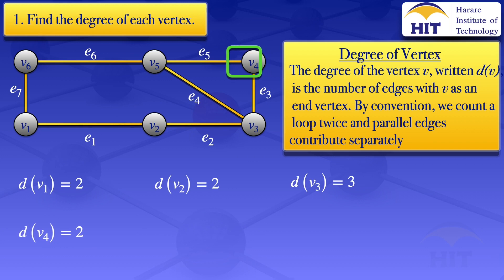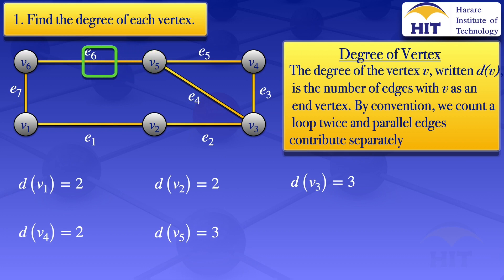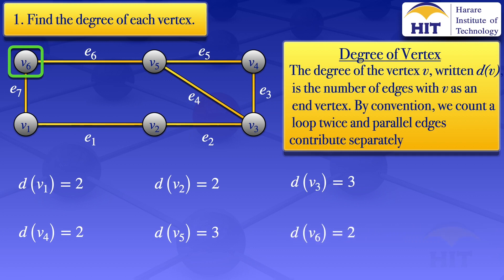Moving to vertex v5, we see that there are edges e4, e5, and e6 — three edges. Therefore, the degree of v5 is 3. Moving on to vertex v6, we see that there are two edges: e6 and e7. The degree of v6 is 2.